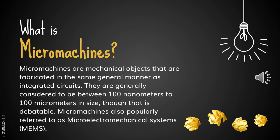What is micromachines? Micromachines are mechanical objects that are fabricated in the same general manner as integrated circuits. They are generally considered to be between 100 nanometers to 100 micrometers in size, though that is debatable. Micromachines are also popularly referred to as microelectromechanical systems, MEMS.